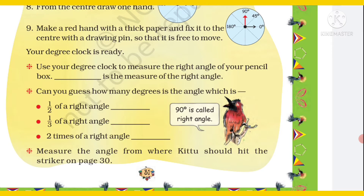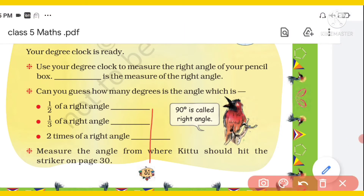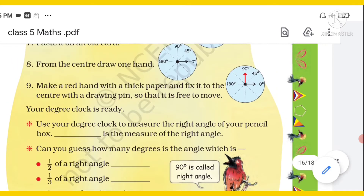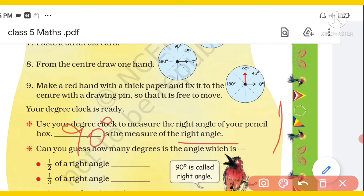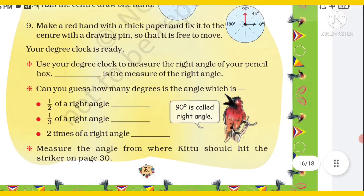Use your degree clock to measure the right angle of your pencil box. When you measure the right angle with the D (protractor) from your geometry box, how many degrees will it be? 90 degrees. You can see here — this is 90 degrees, marked with a red dot. We will write here: right angle = 90 degrees.